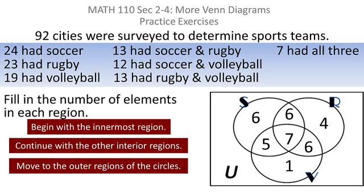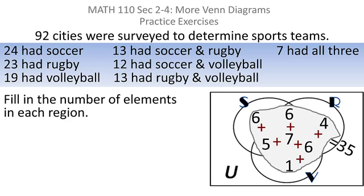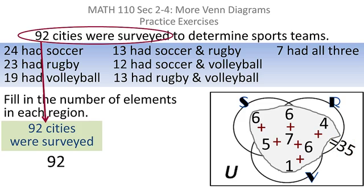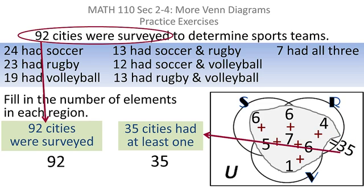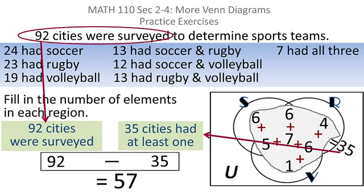I still don't know how many have none, but I do know there are 92 cities surveyed, and I know if you add up what I've already got, I have 35. So that leaves me with the difference between 92 and 35, which happens to be 57.